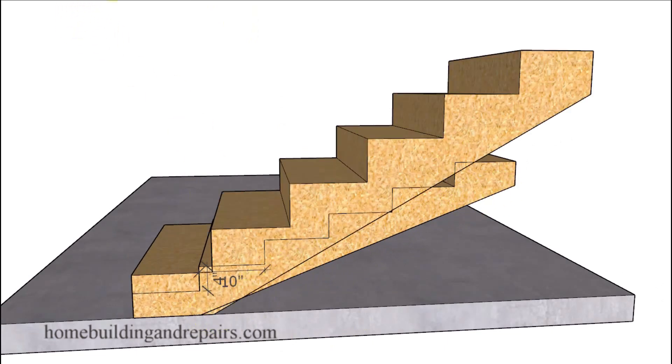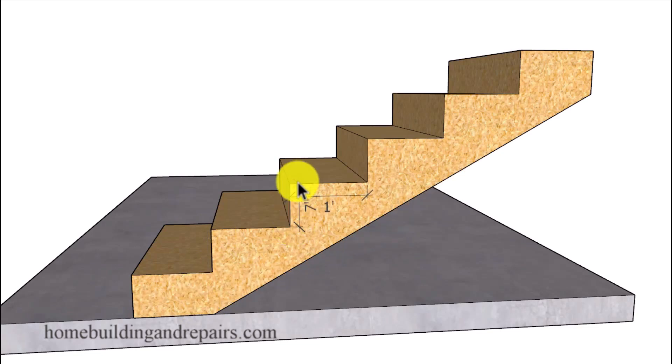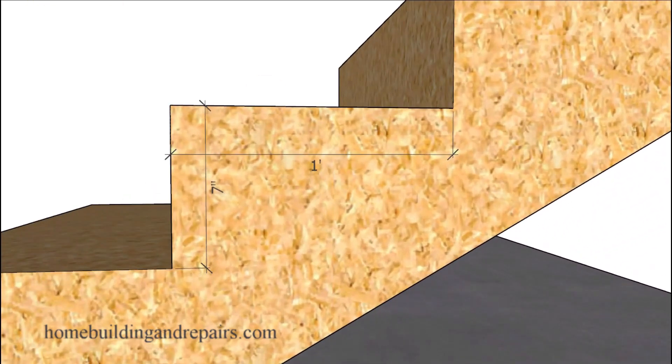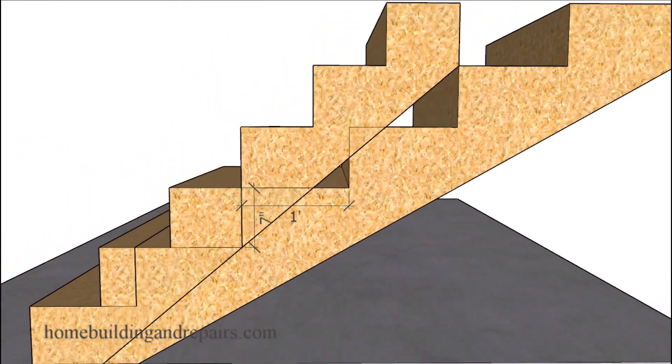And of course the second way would be to increase the riser height. So here I went ahead and took the riser height back to 7 inches and increased the depth of the tread by 2 inches. And again change the angle of the stairway, providing us with another way to change the angle of the stairway.